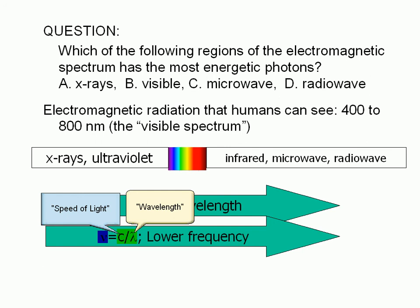In other words, of the types of radiation listed here, x-rays have the highest frequency, and radiowaves have the lowest frequencies.